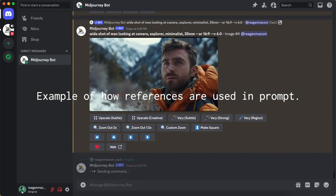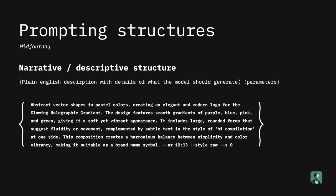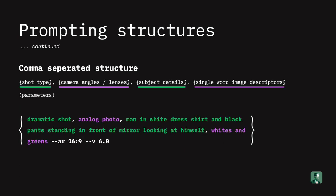Let's move on to prompting structure. There are two kinds I'm going to talk about — the two I've seen most commonly. The first is narrative or descriptive structure: plain English descriptions with details of what the model should generate, plus your parameters. Some people write the prompt almost like a story, describing elements and mood in a poetic narrative style, and this can generate great image results. The second is comma-separated structure, which I use most frequently. This is the order I've found works best: the different things I want to see in the image, angles, lenses, shot types, and single-word descriptors. It gives you more control by telling the model plainly what should be in the image and what styles to adhere to.